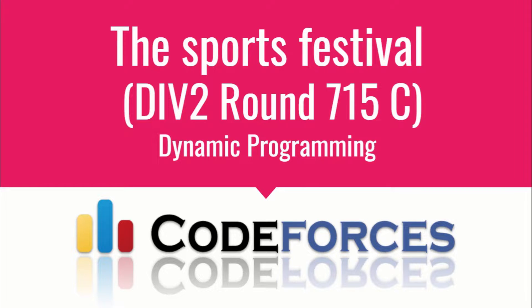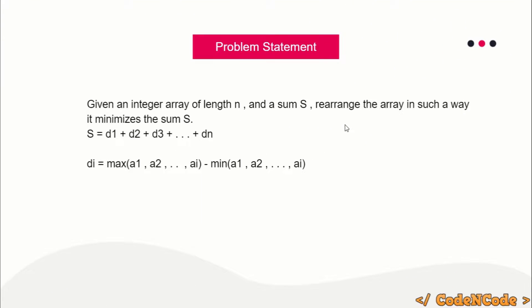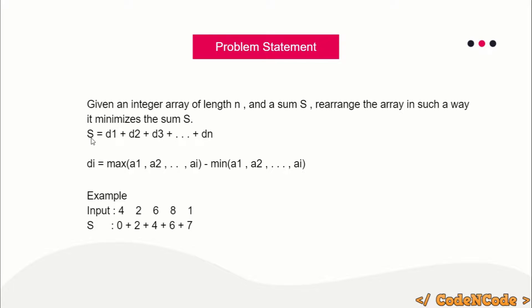Hello guys, this is Code and Code, and this is the video editorial for the problem 'The Sports Festival', the C problem from Codeforces Div 2 Round 715. The problem is simple: you are given an integer array and you have to rearrange it in such a way that minimizes S. S is defined as the sum of d_i, where d_i equals the maximum of the first i elements minus the minimum of the first i elements. For each different arrangement the overall sum S may be different, so we have to find the arrangement which minimizes the total sum S. We don't have to print the arrangement — all we have to do is print the minimum possible sum S.